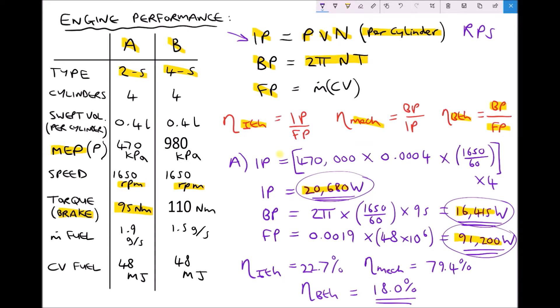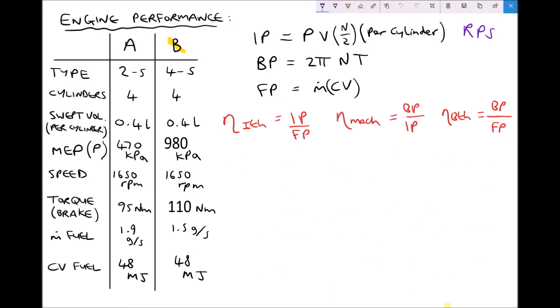For completeness we are going to repeat that set of calculations except this time we are going to use the data for our four stroke engine, engine B. Let's clear some space and begin those calculations.